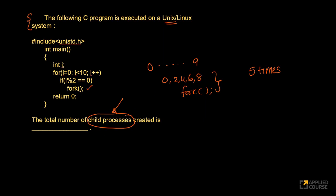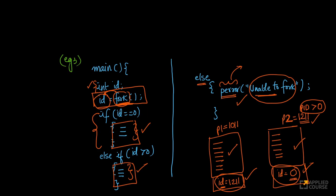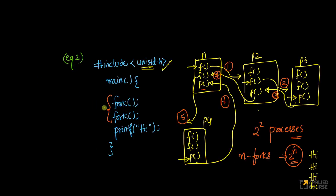We have seen in one of the previous examples here, look at this. Here we have seen that when I have two processes, I created 2 squared total number of processes. When I have n forks, if I have two forks, I created 2 squared processes.